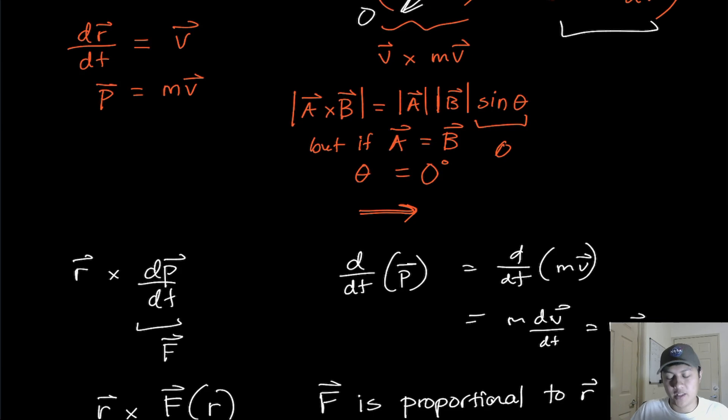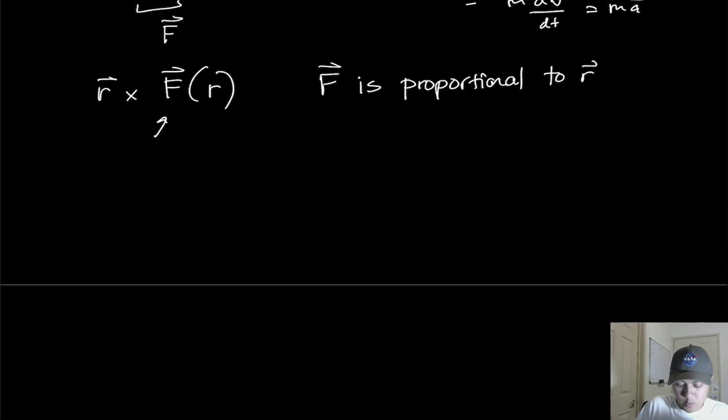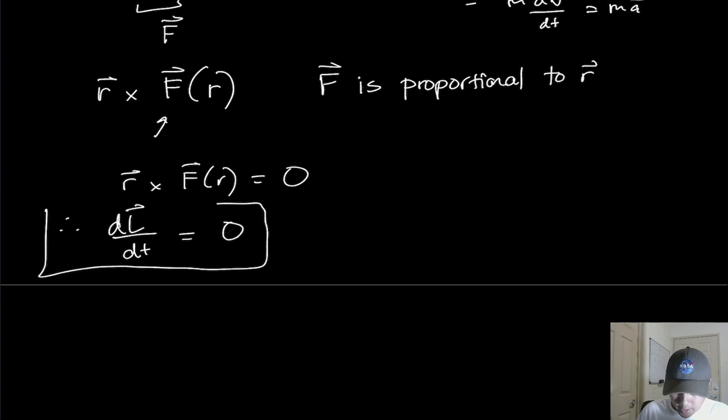And so the cross product is going to be zero because the angle is zero. So in that case, we'll get that R cross F of R is equal to zero. And hence, what we've shown is that, so therefore, dL/dt is equal to zero. So angular momentum is a constant. It is conserved when the object is acted upon by a central force.